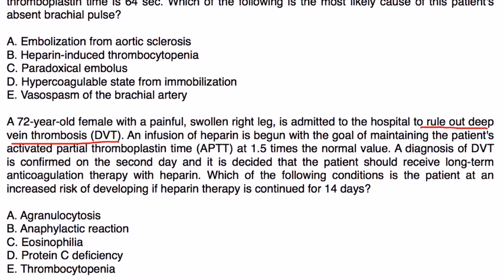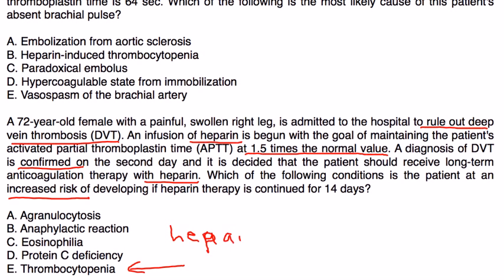In the second vignette, a 72-year-old female with a painful swollen right leg is admitted to rule out DVT. A heparin infusion is started with a goal PTT of 1.5 times normal. DVT is confirmed and long-term anticoagulation with heparin is considered. The question asks what condition the patient is at increased risk of developing if heparin is continued for 14 days. The answer is heparin induced thrombocytopenia — that is what the question is asking.